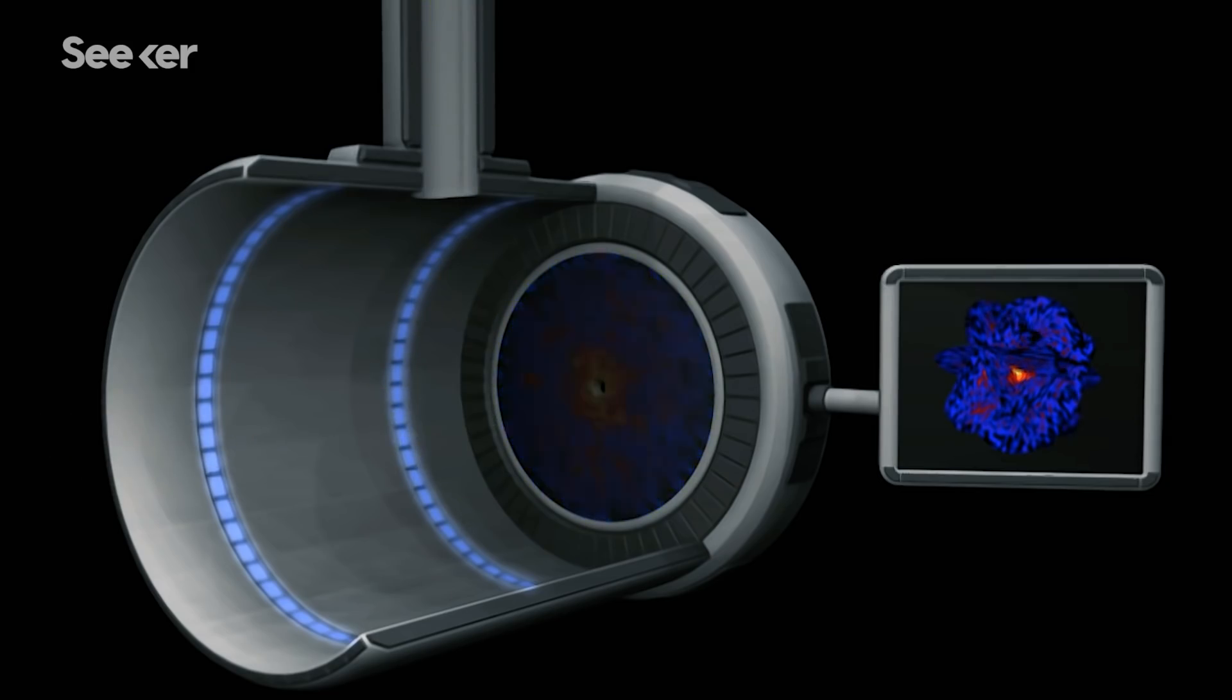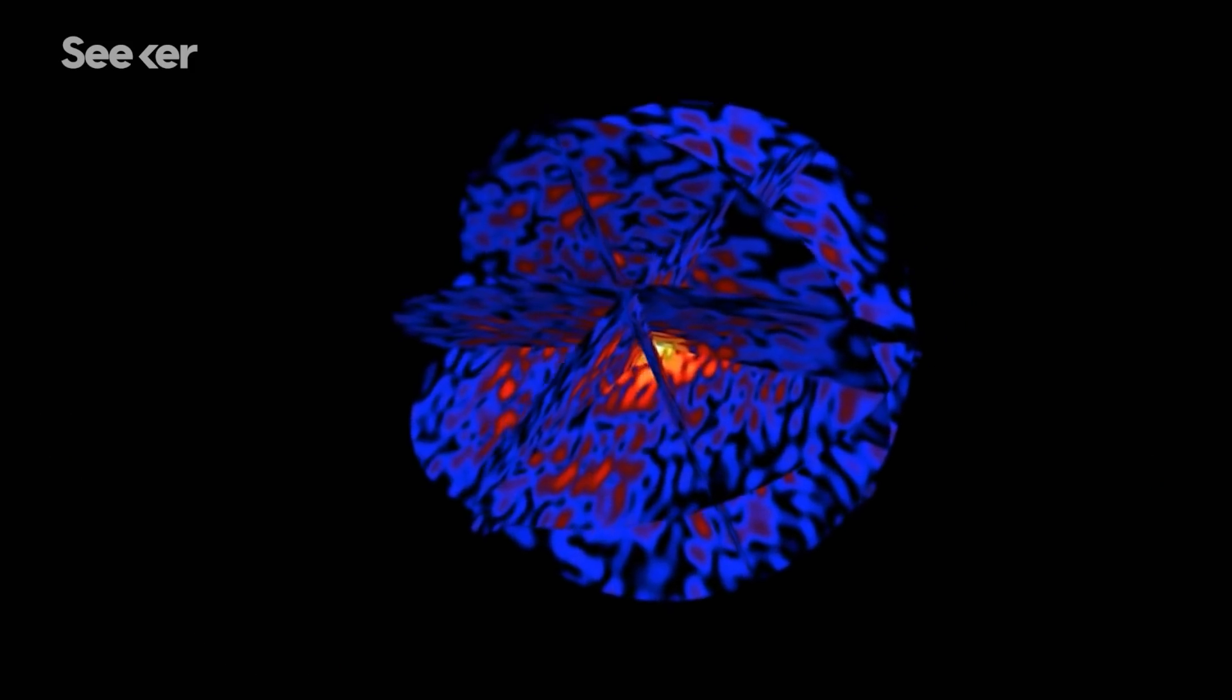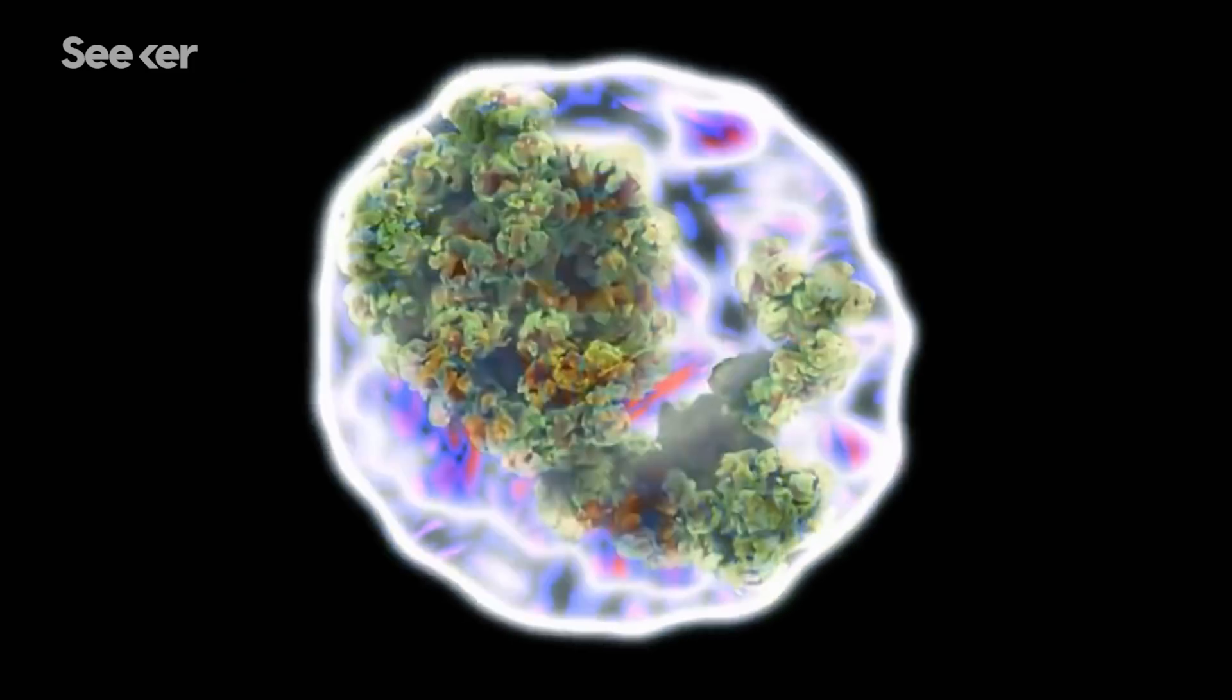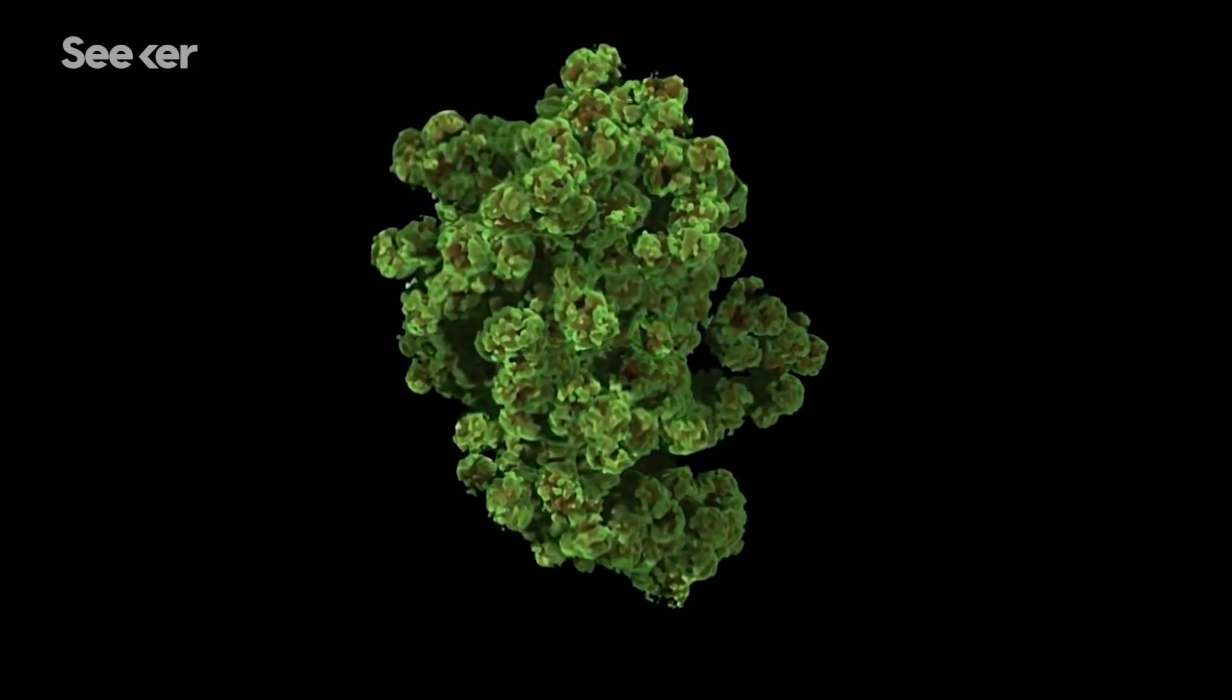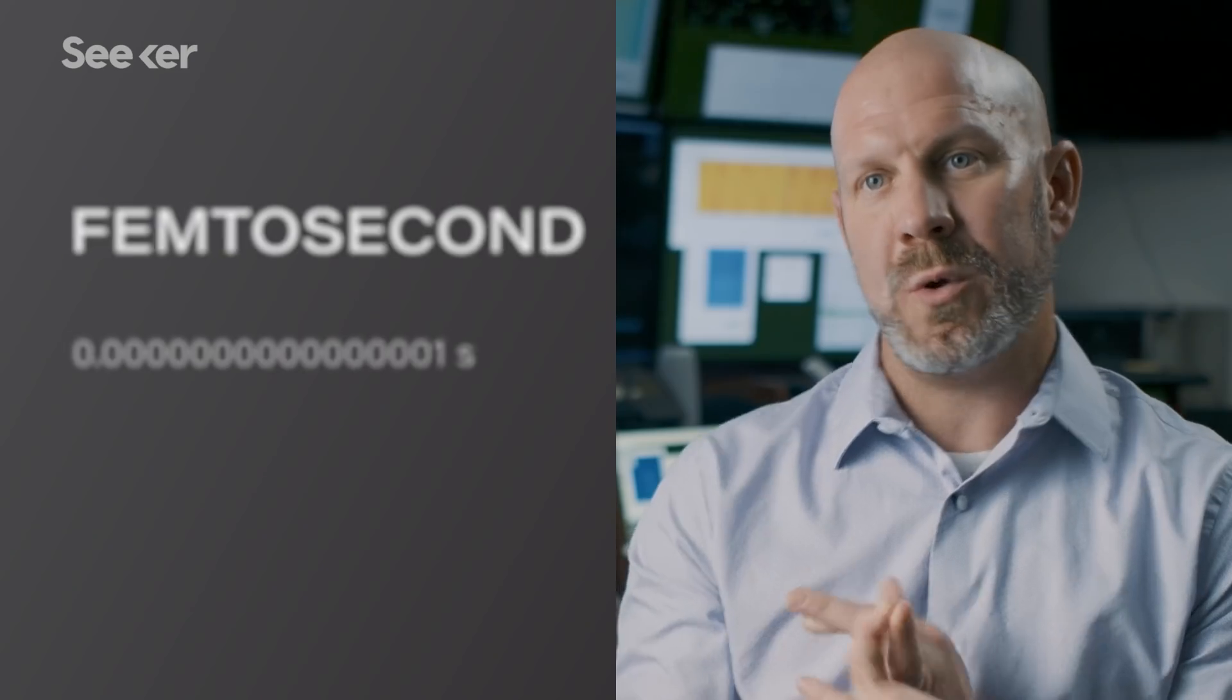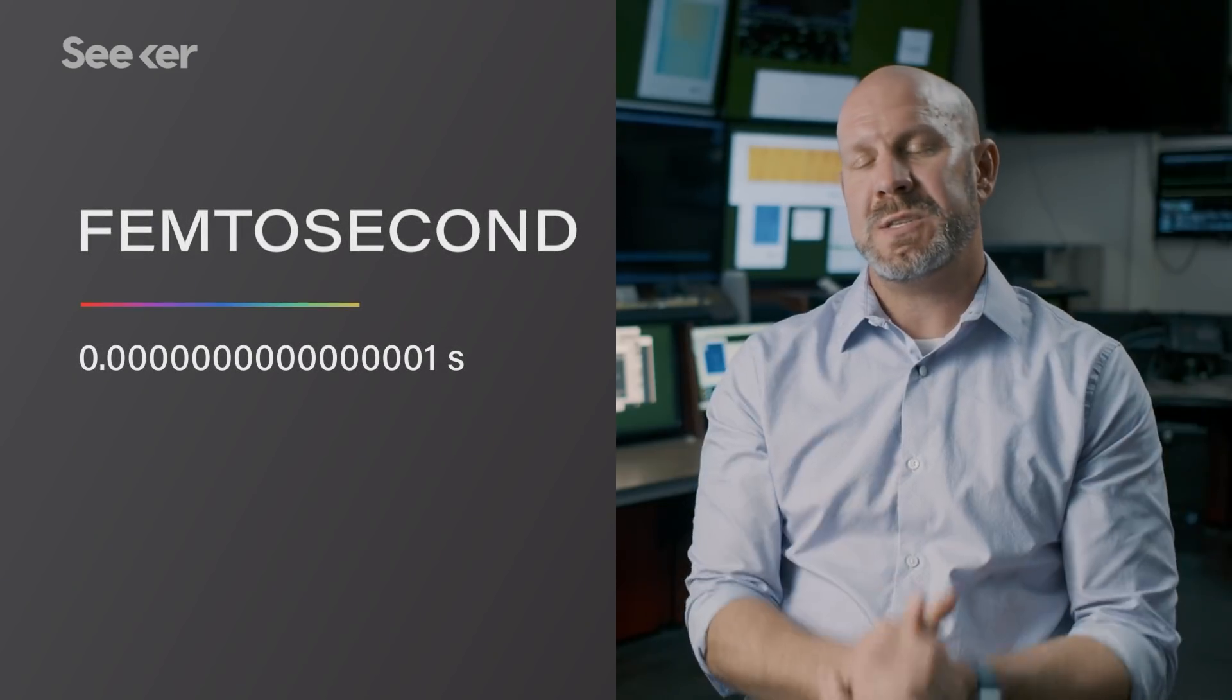Whether that sample is an amino acid or graphene or supercooled water, it gets frozen in time by strobe-like pulses which lasts just for a few femtoseconds. A femtosecond is a quadrillionth of a second. It's one millionth of one billionth of a second. So we would picture that as a one with 15 zeros in front of it.